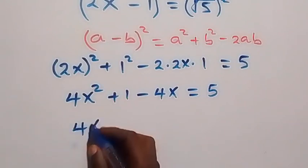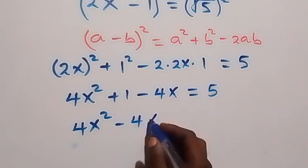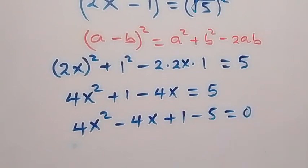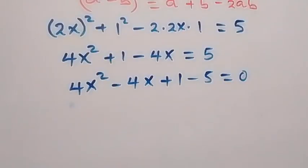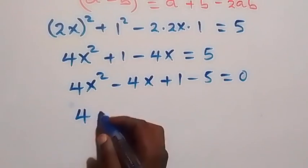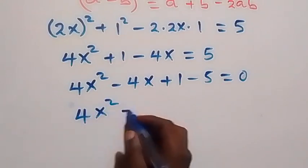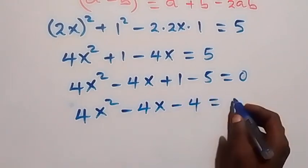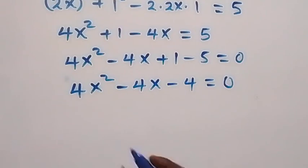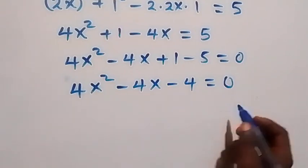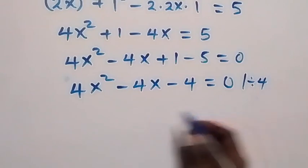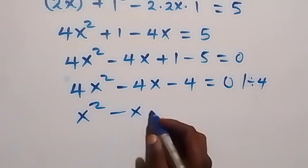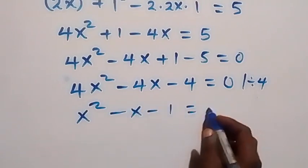When we rearrange, we have 4x squared minus 4x plus 1 minus 5 equals to 0, which is the same as 4x squared minus 4x minus 4 equals to 0. When we divide by 4, this reduces to x squared minus x minus 1 equals to 0.